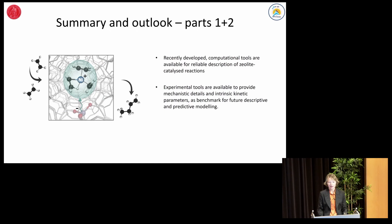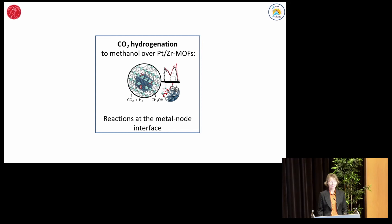As a summary and outlook to the first two parts on zeolite catalysis, recently developed computational tools are available for reliable description of zeolite-catalyzed reactions. Experimental tools are available to provide mechanistic details and intrinsic kinetic parameters as benchmarks for further descriptive and predictive modeling. In my last example, we move to metal-organic frameworks, or MOFs. MOFs are potentially perfect scaffolds for tailoring catalytic sites towards a desired reaction due to the vast opportunities to vary nodes, linkers, and framework topology. The downside compared to zeolites is poorer stability, and the mechanistic insight in MOF-catalyzed reactions is still at an early stage.